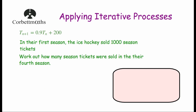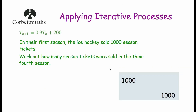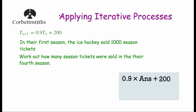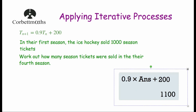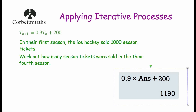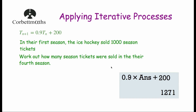We could also use our calculator for this. Type in 1,000 and press equals. Then type in 0.9 multiplied by ANS plus 200, and keep pressing equals. It would tell us 1,100 in our second season, 1,190 in our third season, and 1,271 in our fourth season.